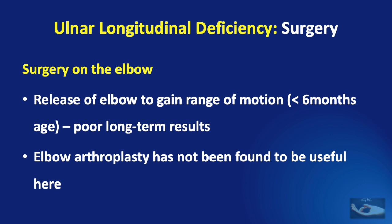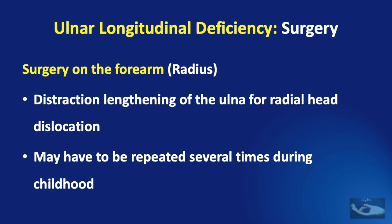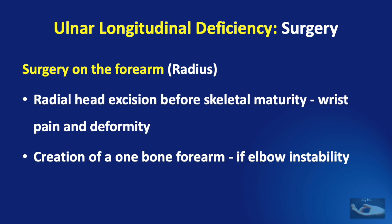Surgery on the elbow may consist of release of the elbow to gain range of motion, which can be done before 6 months of age, but the long-term results are usually poor. Elbow arthroplasty has not been found to be useful in this situation. Surgery on the forearm will involve treatment of the radial head dislocation, which can be treated with distraction lengthening of the ulna — this may have to be repeated several times during childhood as the child keeps growing. Radial head excision before skeletal maturity may result in wrist pain and deformity.